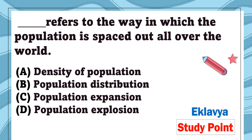Question 1: Dash refers to the way in which the population is spaced out all over the world. Option A is density of population, option B is population distribution, option C is population expansion, and option D is population explosion. The correct answer is population distribution, because population distribution refers to the way in which the population is spaced out all over the world.